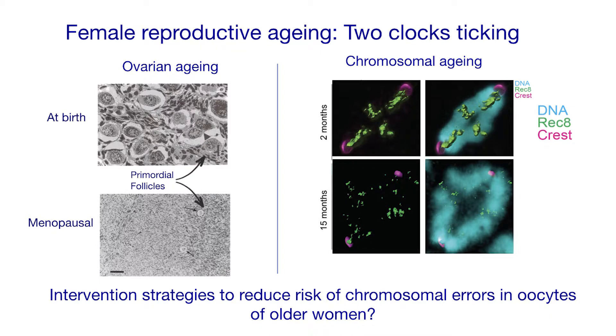We now think of female reproductive ageing as consisting of two clocks. There's one clock where this stockpile of primordial follicles that we're born with become depleted throughout life, resulting in the menopause. But then there's this chromosomal ageing, which actually precedes ovarian ageing by about a decade or so. We think that Rec8 and the cohesin is acting as a molecular clock, just to time-limit female reproductive lifespan. Whether we can develop intervention strategies — it's unlikely that we can stop the loss of cohesin, but there is a possibility that we might be able to minimise its effects.